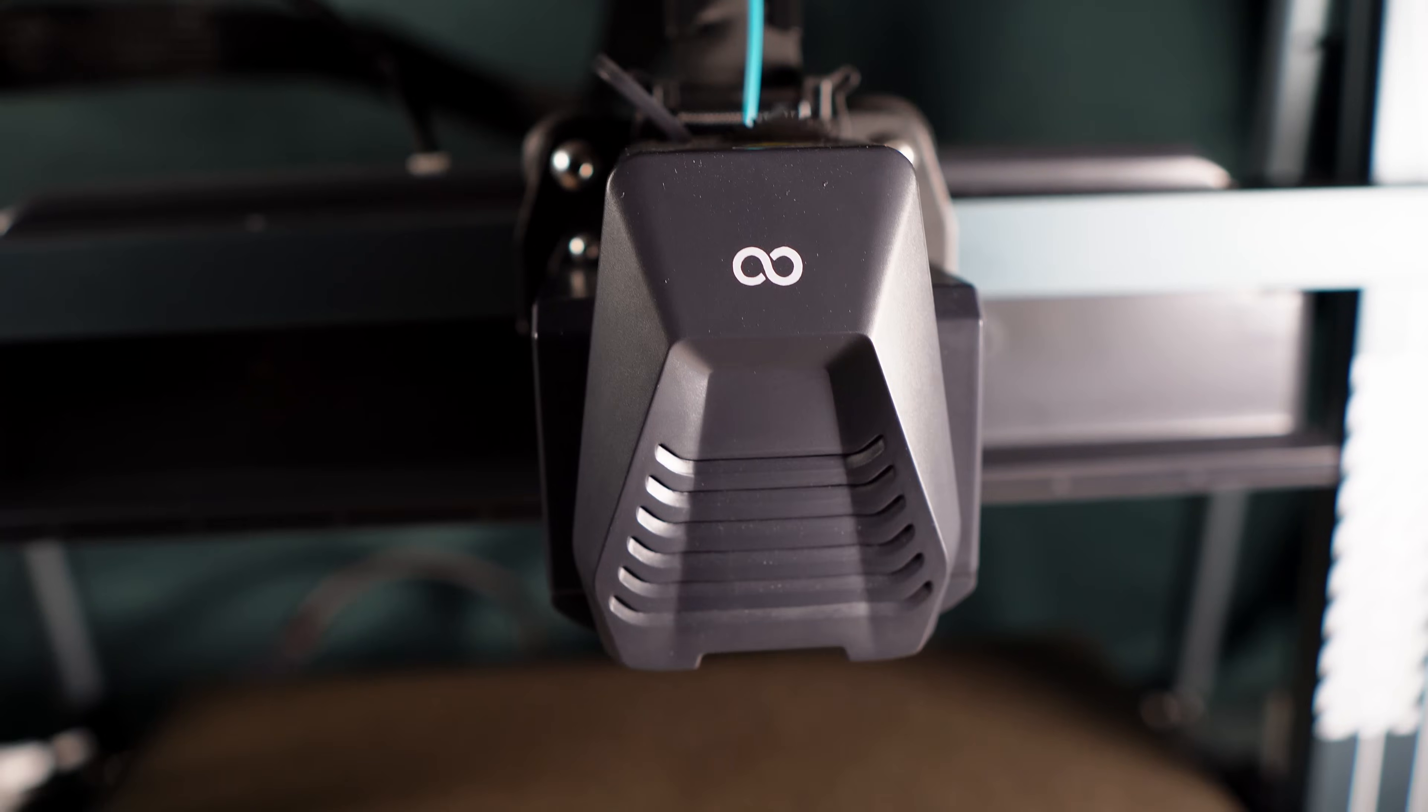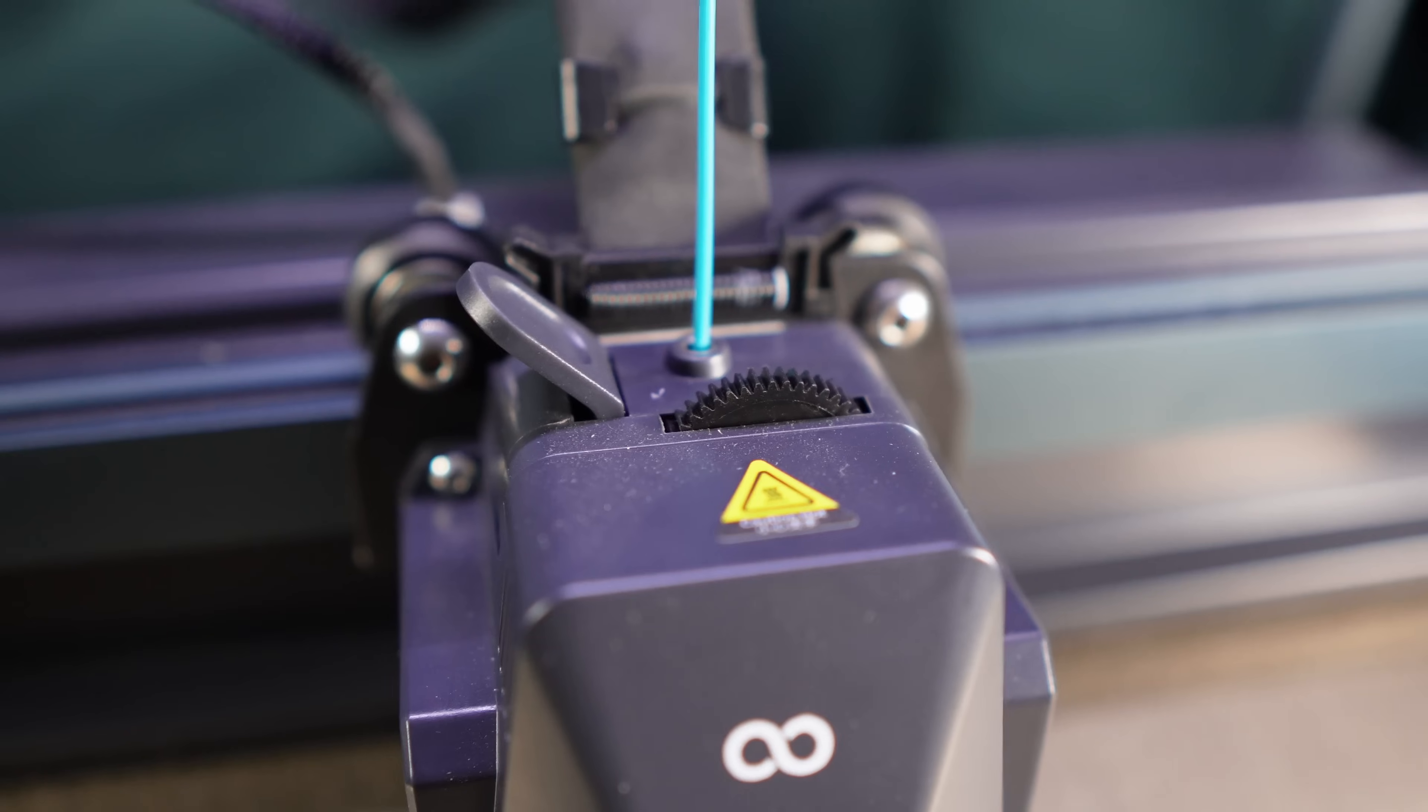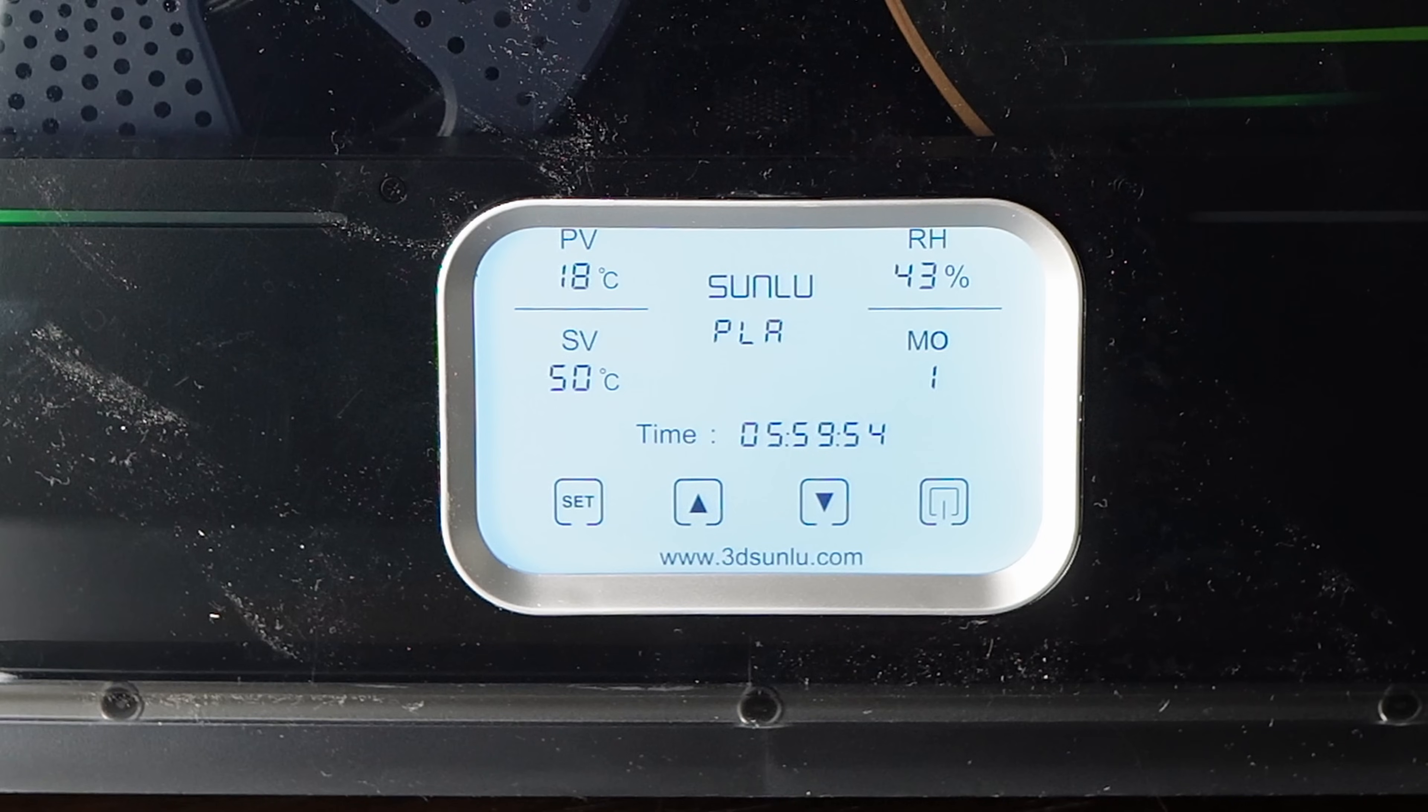There are a few things to consider when printing with TPU. The extruder type, print speed, retraction, moisture levels, and temperature. This isn't a complete list, but it's a good start.